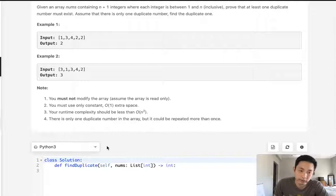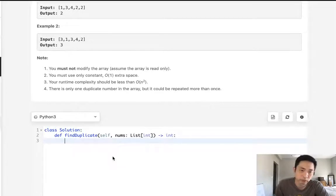On top of that, our runtime complexity should be less than n squared. So that complicates things because if you can't sort it, then maybe you can use a set, but a set would not constitute constant space. So how can you solve this?